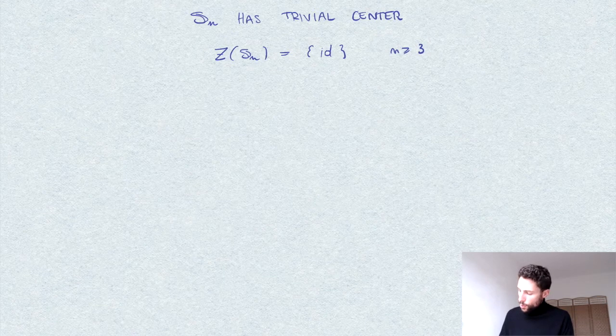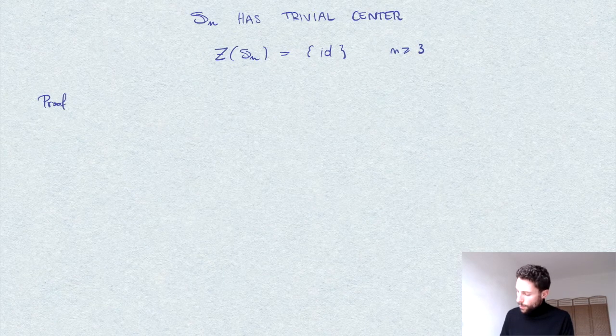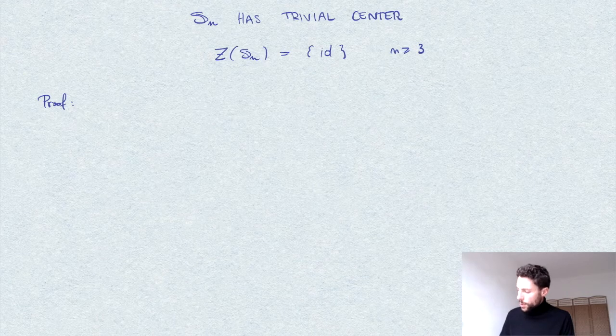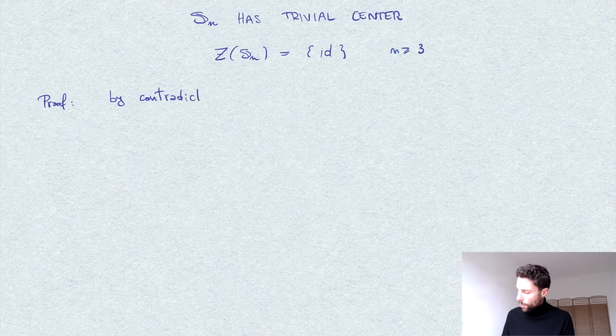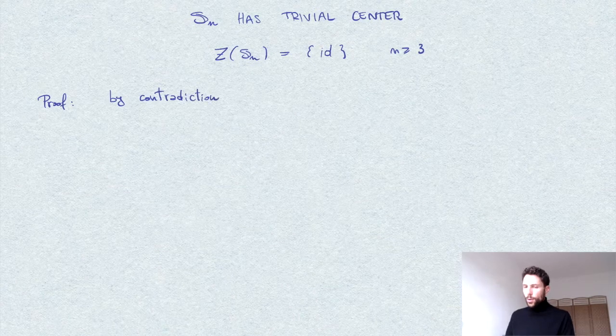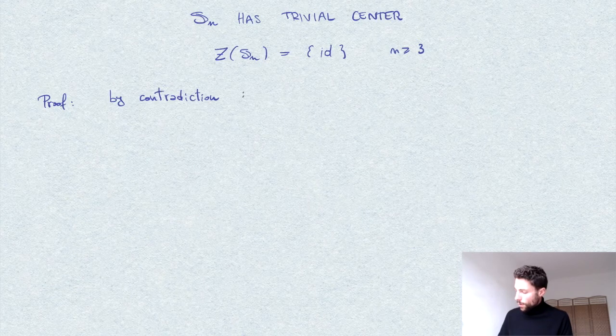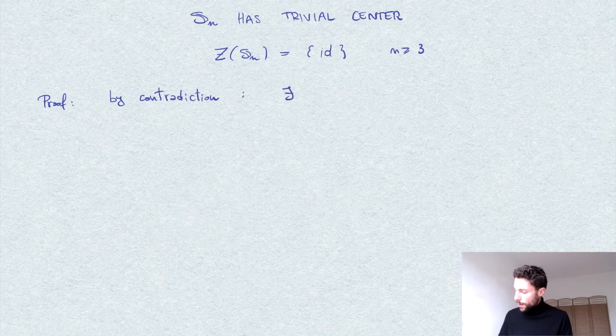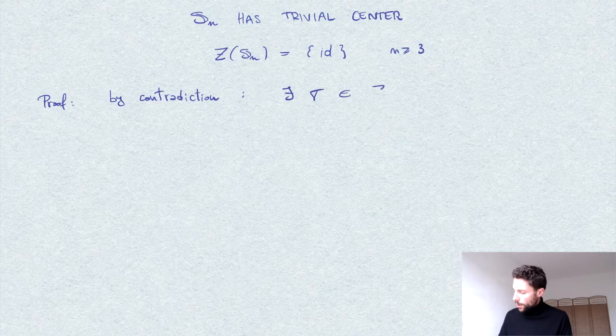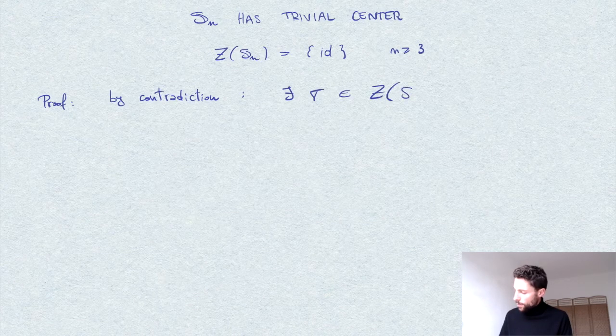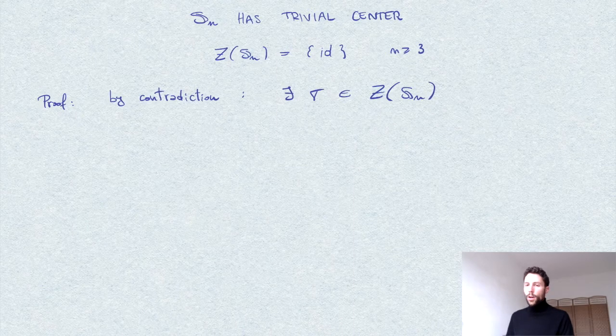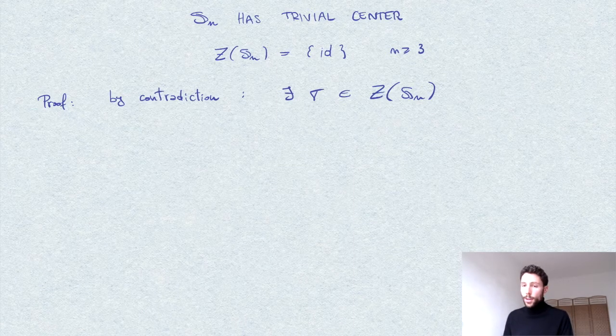So let's prove this. We do it by contradiction and we look for a contradiction. So we assume that there exists an element sigma that commutes with any other element, namely it's in the center of Sn, and it's different than the identity.